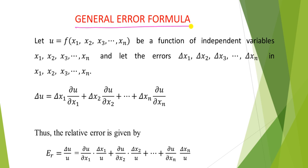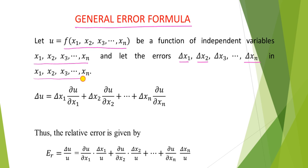Let u equal to a function of x1, x2, x3 up to xn, where x1, x2, x3, xn are n independent variables and u depends on x1, x2, x3, xn. Let the errors in x1 be denoted by delta x1, x2 by delta x2, up to xn by delta xn. So delta x1, delta x2, delta x3, delta xn are the errors in x1, x2, x3, xn.